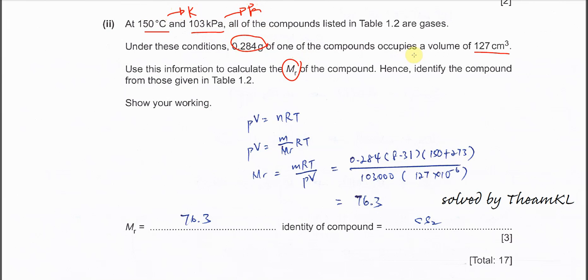Volume in cm³ needs to be converted to m³. Derive the formula: PV = nRT. We know n = mass/molar mass, so molar mass = mRT/PV.